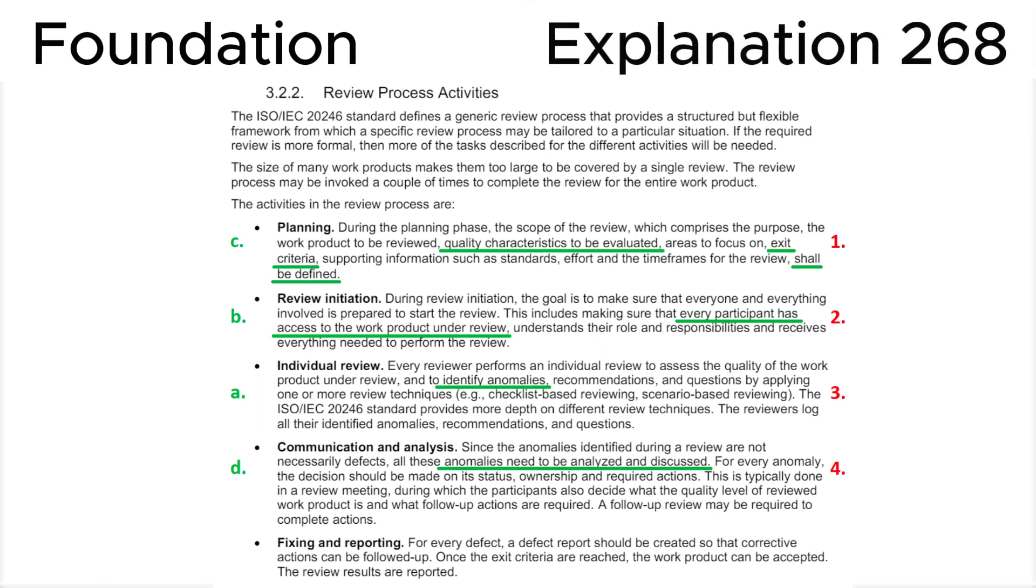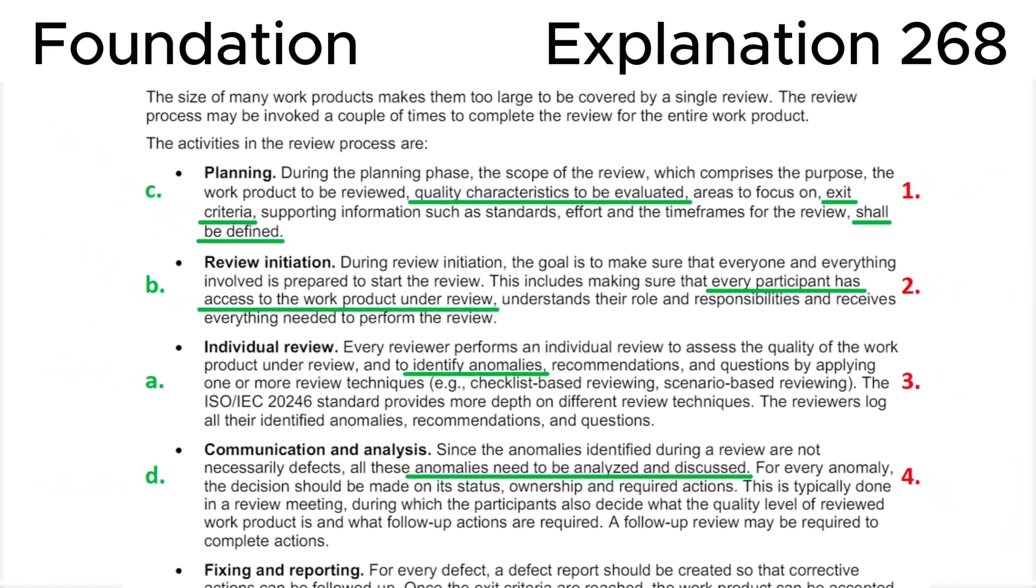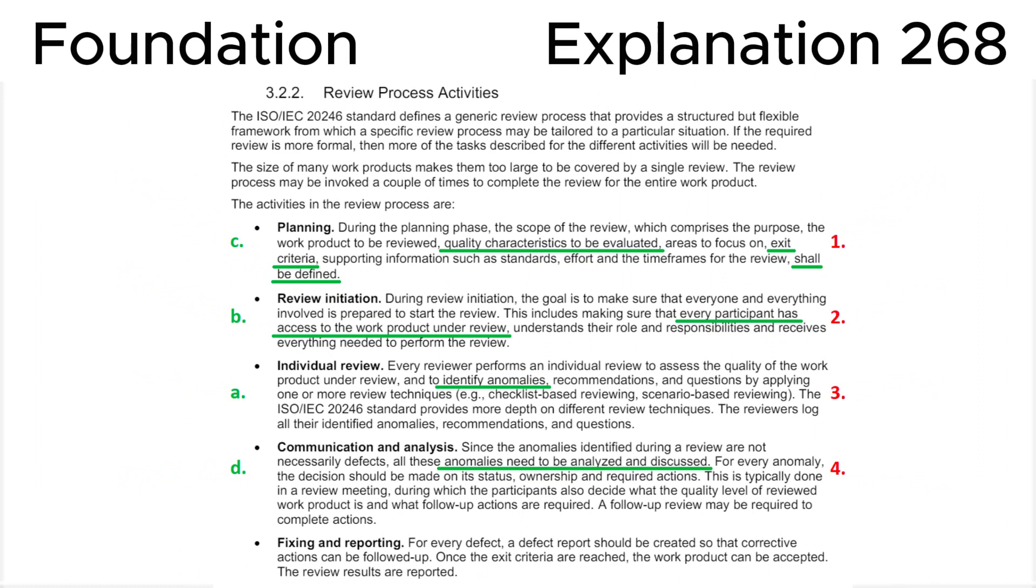At last, let's look at section 3.2.2 Review Process Activities in the ISTQB syllabus, where we can see that during the planning phase, quality characteristics to be evaluated and exit criteria shall be defined. During review initiation, every participant has access to the work product under review. Individual review: every reviewer performs to identify anomalies. Communication and analysis: all these anomalies need to be analyzed and discussed. This is fully consistent with the correct answer D.